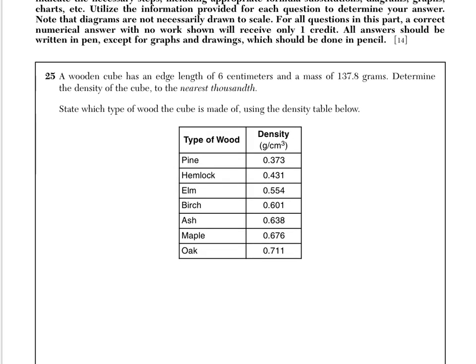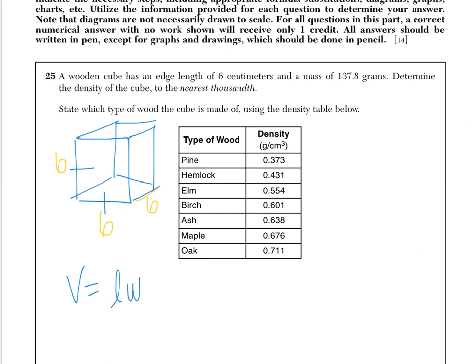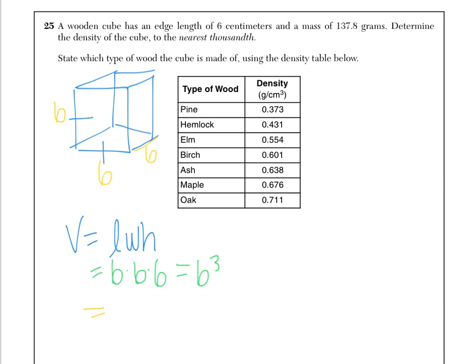Number 25 says a wooden cube has an edge length of 6 centimeters and a mass of 137.8 grams. Determine the density to the nearest ten-thousandth and state which type of wood it is using the density table. A cube has all sides congruent, so volume equals length times width times height, which is 6 times 6 times 6, or 6 cubed. That gives us a volume of 216 cubic centimeters.